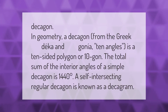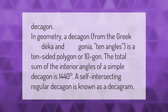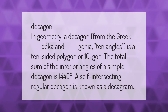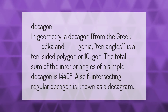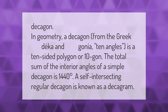In geometry, a decagon — from the Greek 'deca' (10) and 'gonia' (angles) — is a 10-sided polygon or 10-gon. The total sum of the interior angles of a simple decagon is 1440 degrees. A self-intersecting regular decagon is known as a decagram.